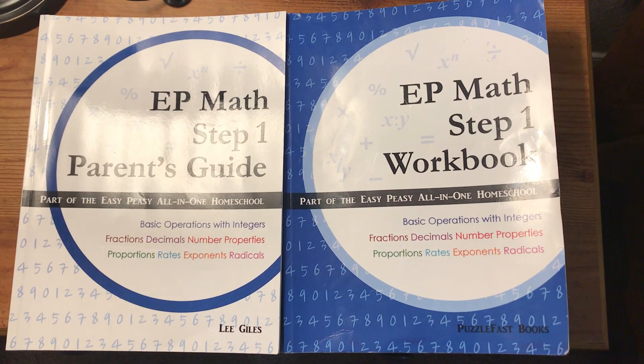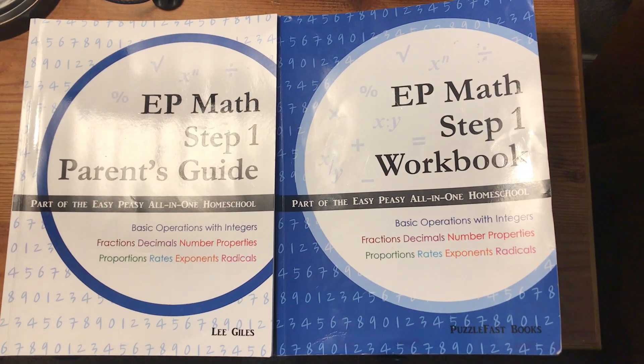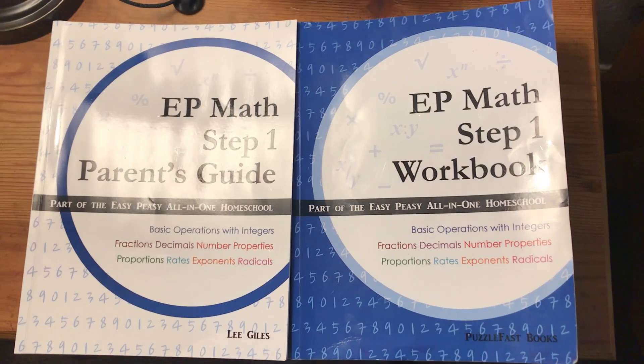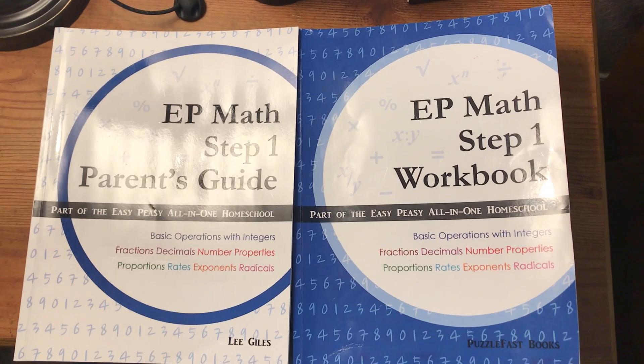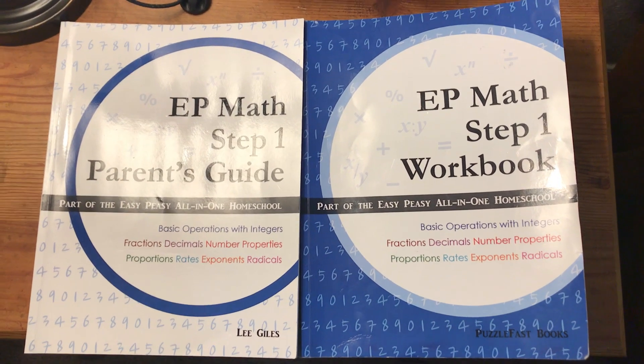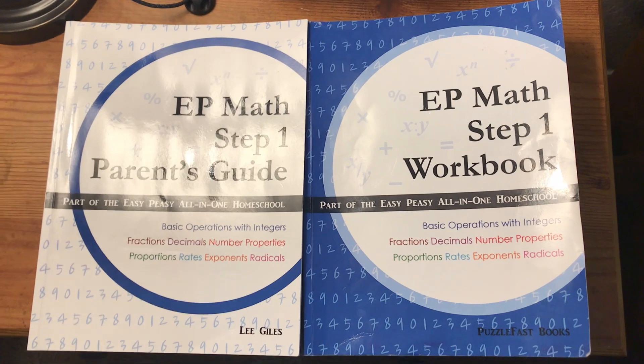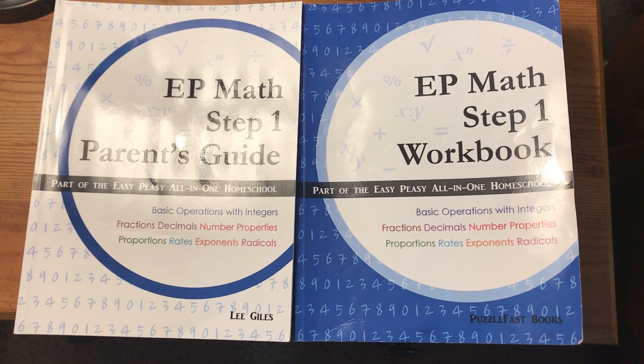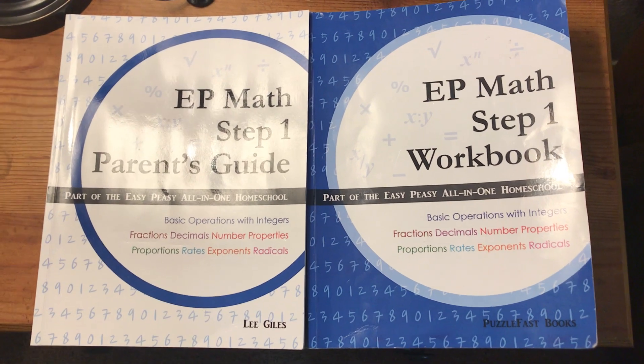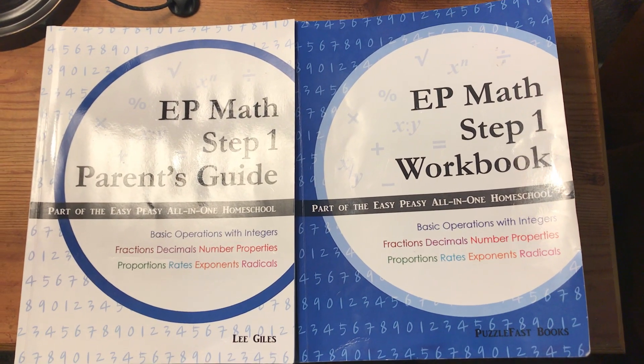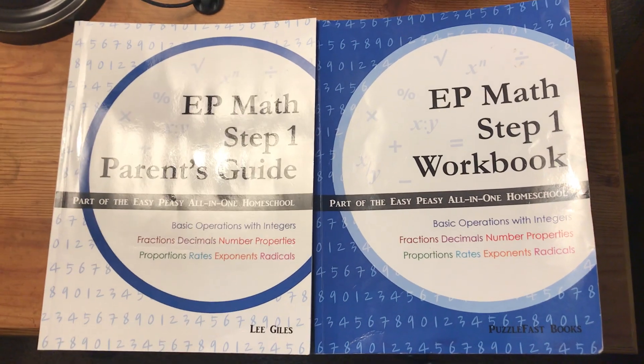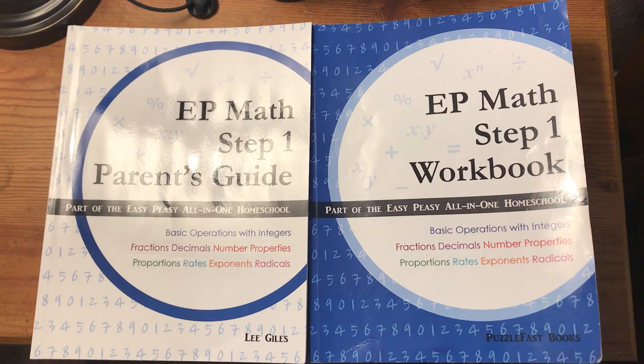This is for middle school, so there's three steps in the middle school Easy Peasy Math program. They have getting ready one and two which is preschool and kindergarten, then they have levels one two three and four, then it jumps to middle school math step one two three, which puts them in algebra in eighth grade. So essentially, middle school math step one would be appropriate for fifth grade if you were to follow Easy Peasy Math from the beginning.